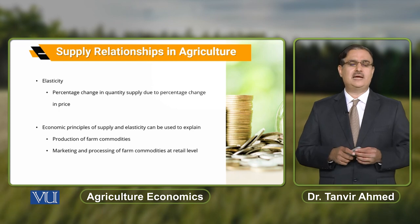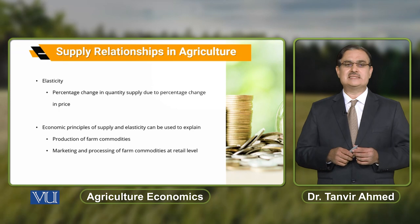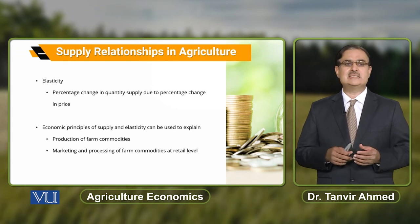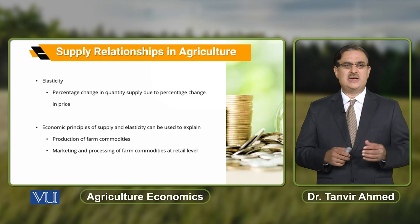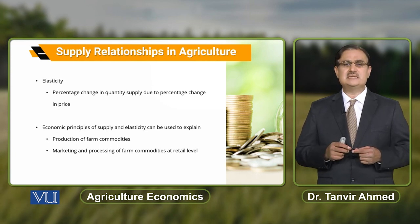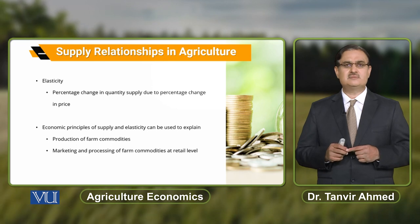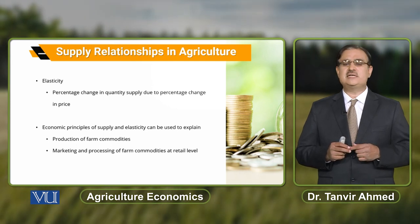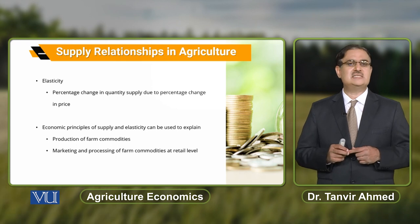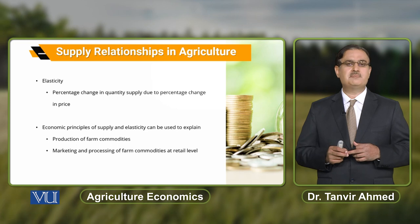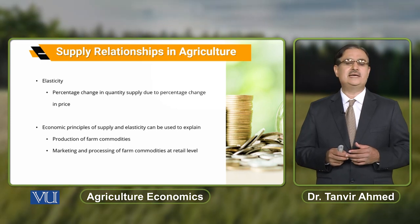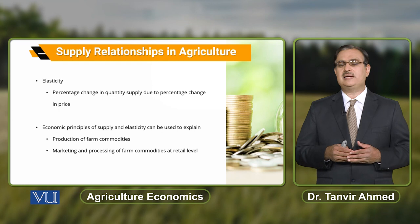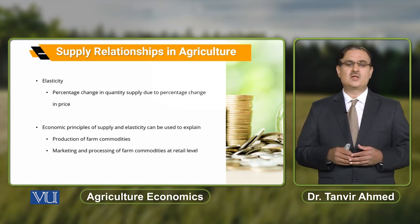Another important concept we frequently use is elasticity with reference to supply. It is the percentage change in quantity supplied due to percentage change in price. The computed value of elasticity indicates whether the price elasticity of supply is elastic, inelastic, or unit elastic. Elastic indicates that percentage change in quantity supplied is greater than percentage change in price. Inelastic indicates that percentage change in quantity supplied is less than percentage change in price. Unit elastic indicates that percentage change in quantity supplied is equal to percentage change in price.